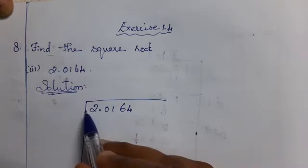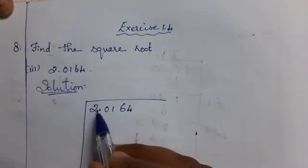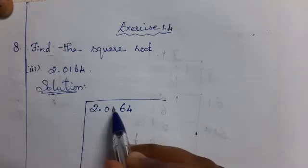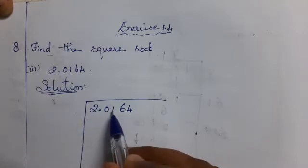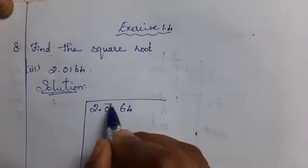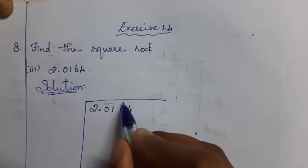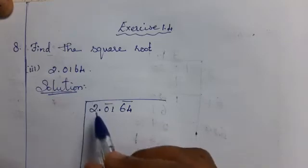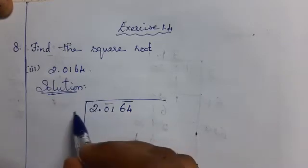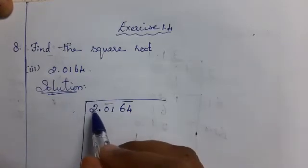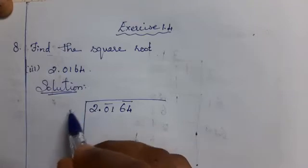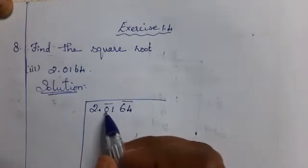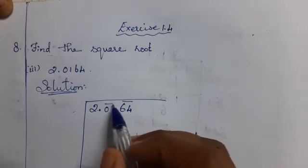Before the decimal, you must count from right to left 2 digits and put the comma. After the decimal, take 2 digits and put one small bar. Then next 2 digits, put them. For square root of decimal numbers: for whole numbers, count from the right side and put a comma to separate. For the decimal part, group into 2 digits and separate.